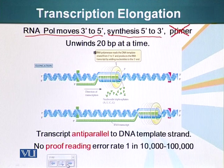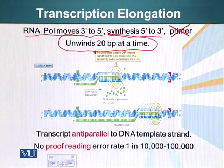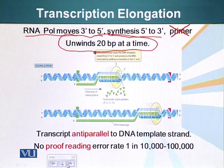The RNA polymerase unwinds 20 base pairs at a time, and as it moves along it is making the RNA transcript. The transcript is anti-parallel to the DNA template strand — we know exactly what that means, as we have talked about that in detail.